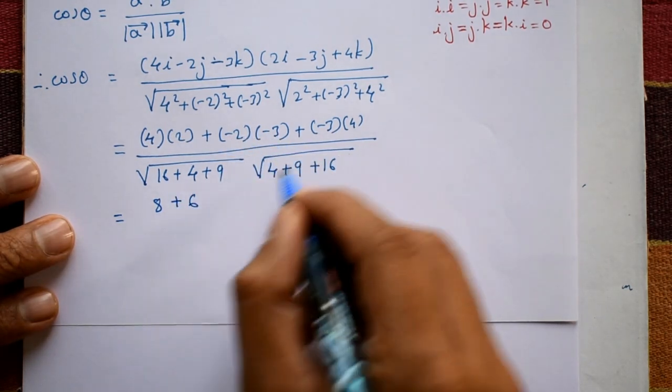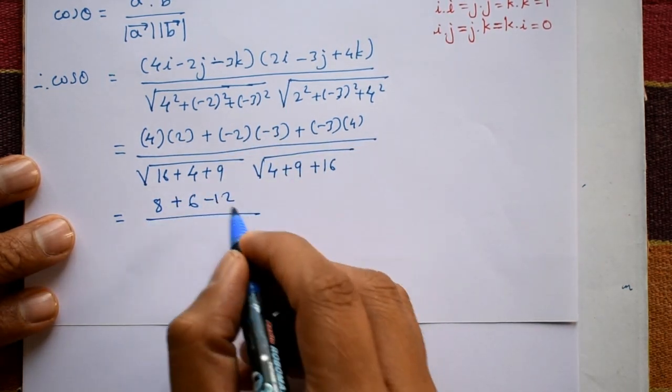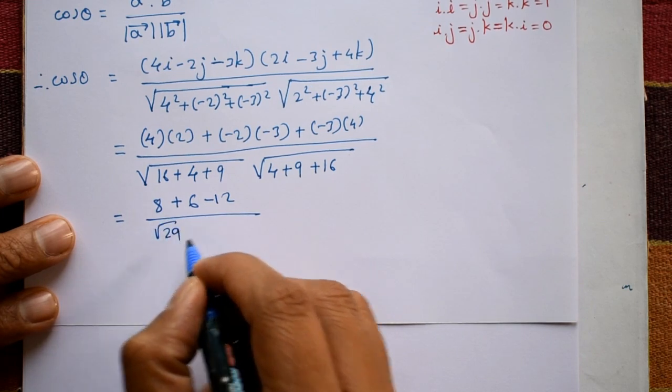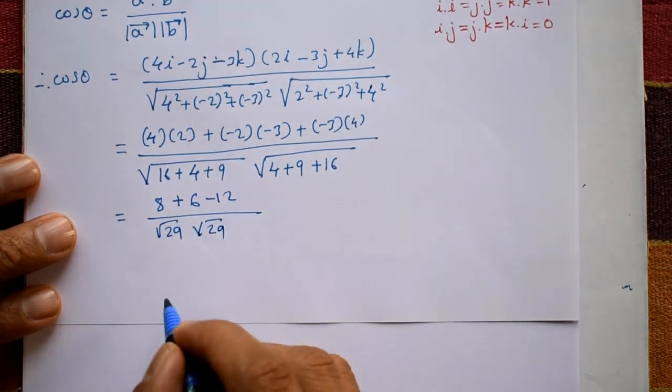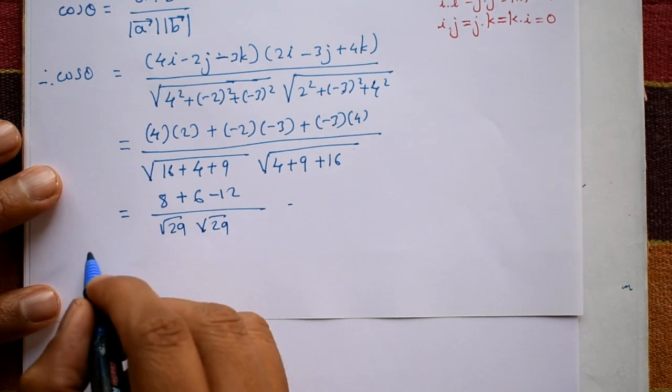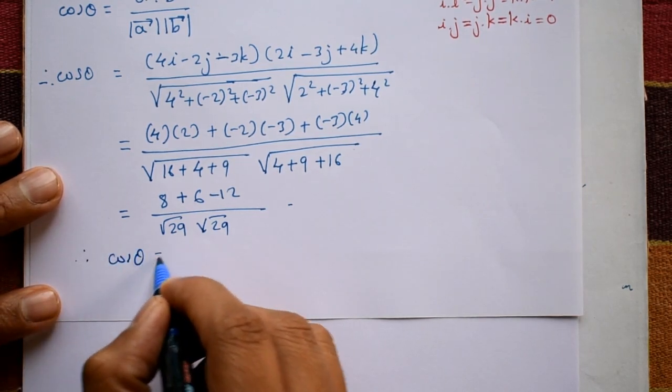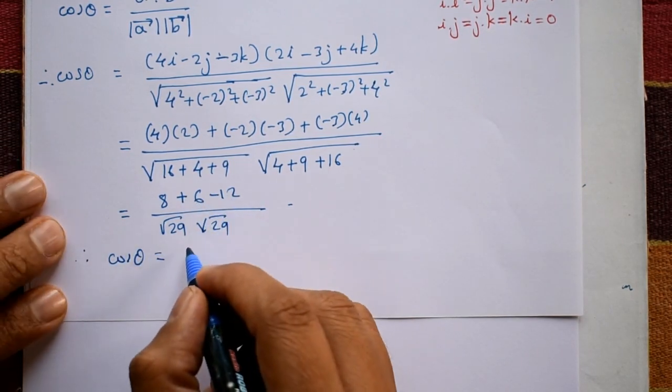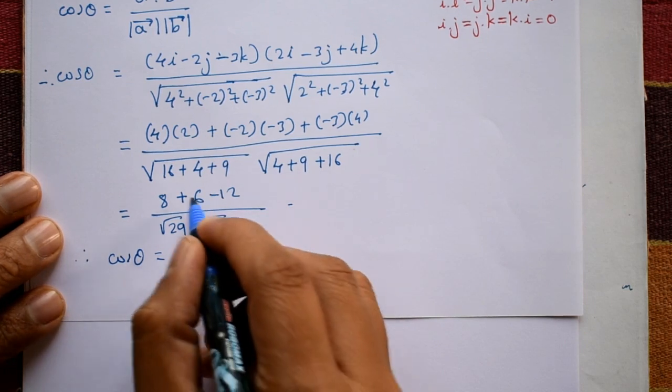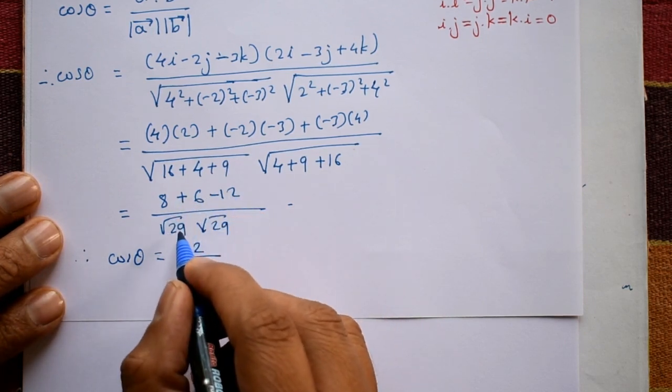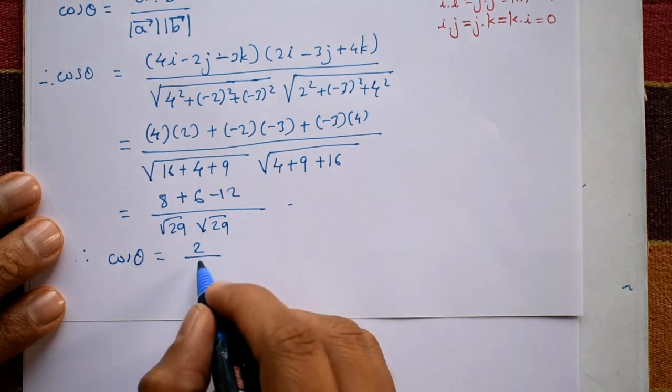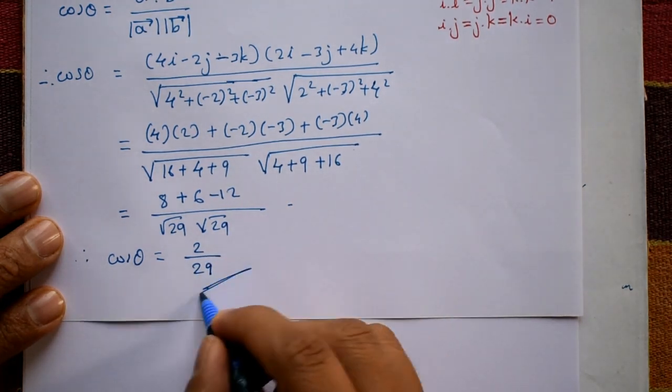Divided by root 29 and root 29. Therefore, cos theta equals 2 divided by root 29 into root 29, which is 2 divided by 29. This is the required solution.